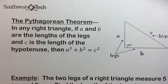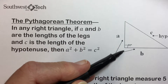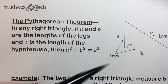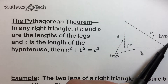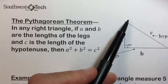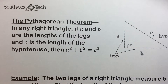The Pythagorean theorem states that in any right triangle, A and B are the lengths of the legs — the sides that make up the right angle in a right triangle — and C is the length of the hypotenuse, the longest side, the side always opposite the 90-degree angle.